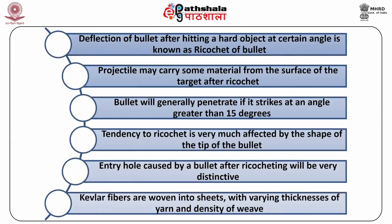Summary: the deflection of a bullet after hitting a hard object at a certain angle is known as ricochet. The projectile may carry some material from the surface of the target. On ordinary ground, the bullet will generally penetrate if it strikes at an angle greater than 15 degrees. The tendency to ricochet is very much affected by the shape of the tip of the bullet. The entry hole caused by a bullet after ricocheting will be very distinctive, caused by a deformed bullet with generally shabby or ragged edges. Kevlar fibers are woven into sheets with varying thicknesses of yarn and density of weave to provide the particular properties required.